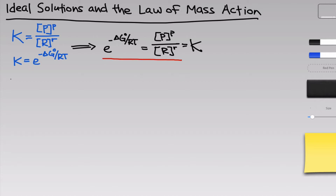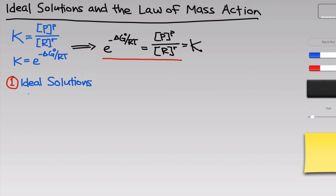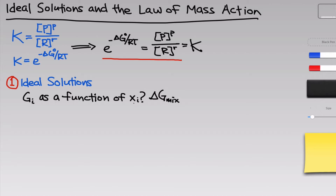We're going to see that in this video. Let's start by revisiting the theory of ideal solutions. In particular, what we want to know is how does the free energy of a component in an ideal solution vary as a function of its mole fraction? We can also think of this in terms of delta G — the change in free energy for mixing, going from the pure component i to a mixture of i with something else. As a starting point, we know that delta G of mixing equals delta H of mixing minus T times delta S of mixing.